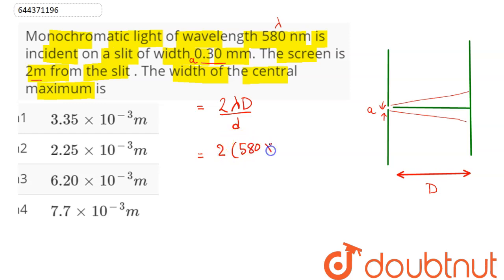So this comes as 2 into lambda is 580 nanometer, so 580 into 10 power minus 9, capital D here is 2 meter divided by small d which is given to be 0.3 mm, that is A. So this d is equal to small a.